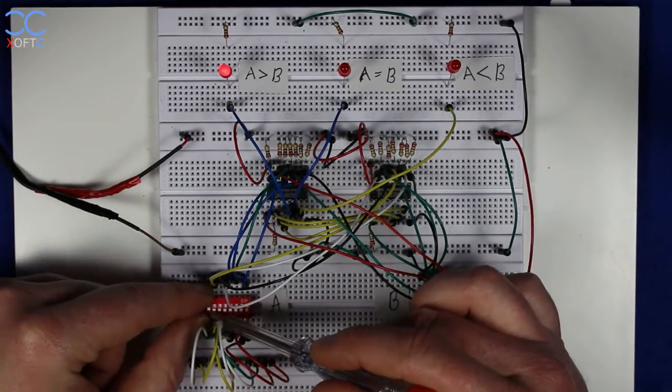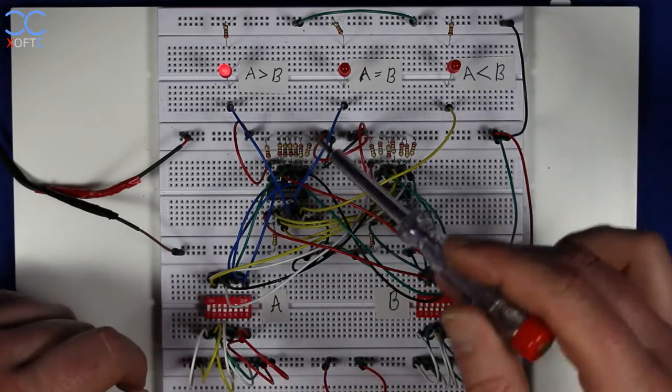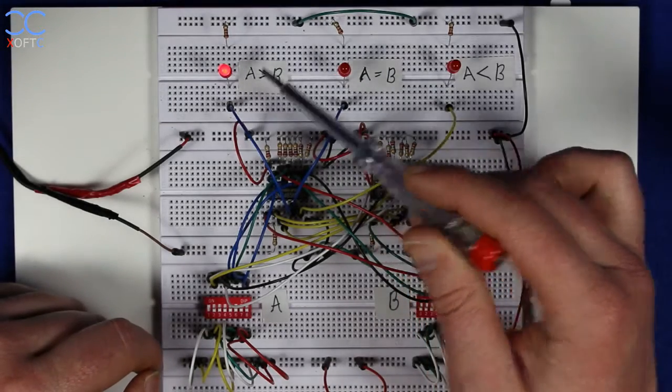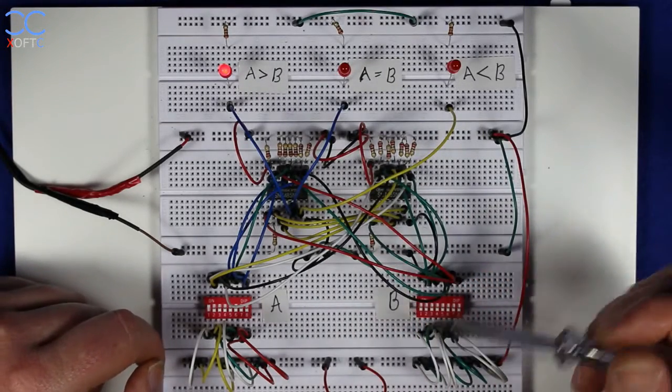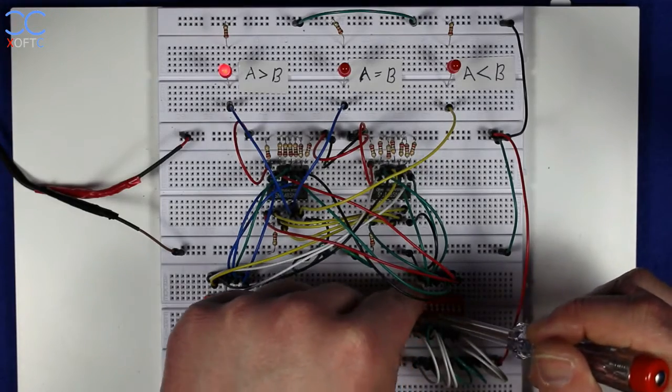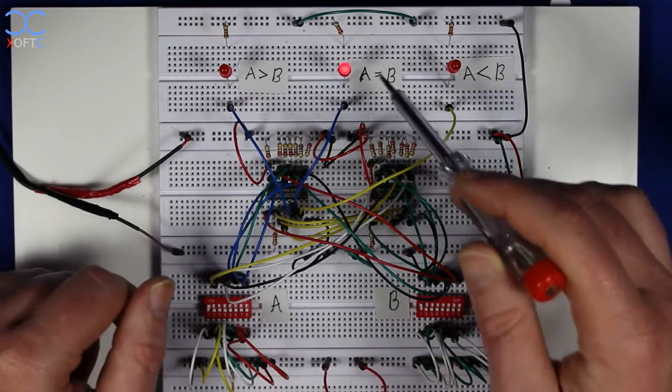So I'm going to set A to 1, and we can already see that right now the output A is larger than B, and if I set B to 1 as well, then we're back to A equals B.